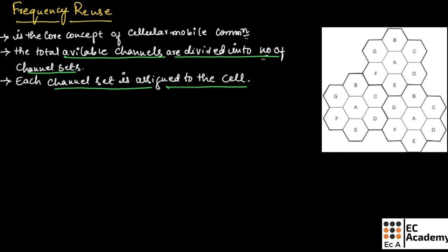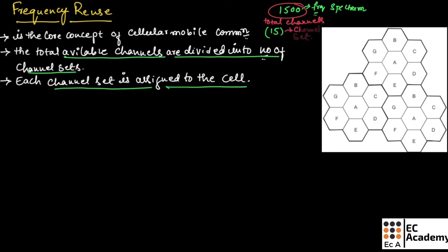For example, if we are having 1500 frequency spectrum, this is the total available channel, out of which 15 might be allocated to each cell. So we can say 15 is the channel set. As you can see in this diagram, each cell will be allocated 15 channels for its operation. This diagram shows the concept of frequency reuse where each cell is given a name from A to G.